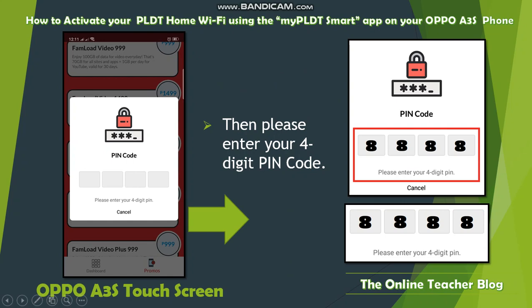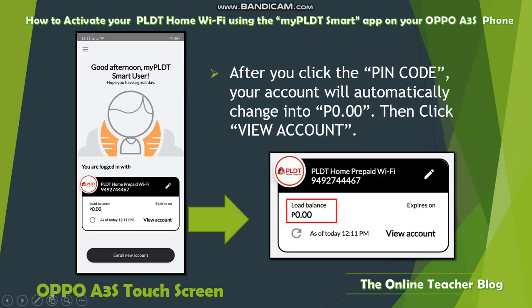If you do not want to proceed, click Cancel. Otherwise, enter your four-digit PIN code. After entering the PIN, your account balance will automatically change to zero. Click 'View Account' to see the updated PLD Home Wi-Fi load balance. You can reload again if you want another promo.